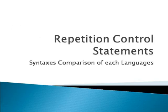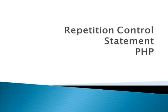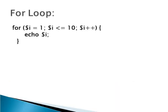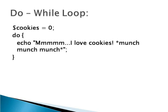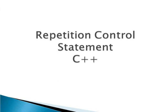Let's move on to repetition control statements. For loop example in PHP. While loop example - here the condition is checked, the $i value should be less than or equal to 10. Do while loop - initially $cookies variable is initialized to 0. Repetition control statements in C++.